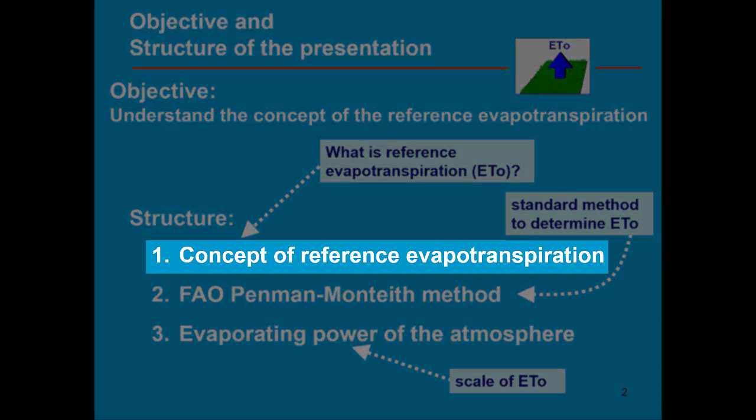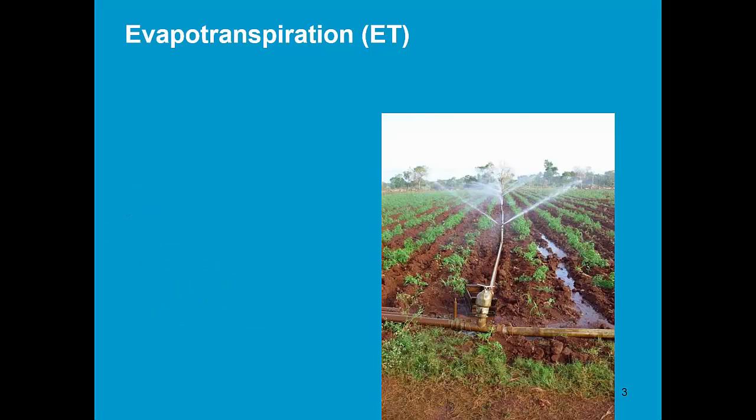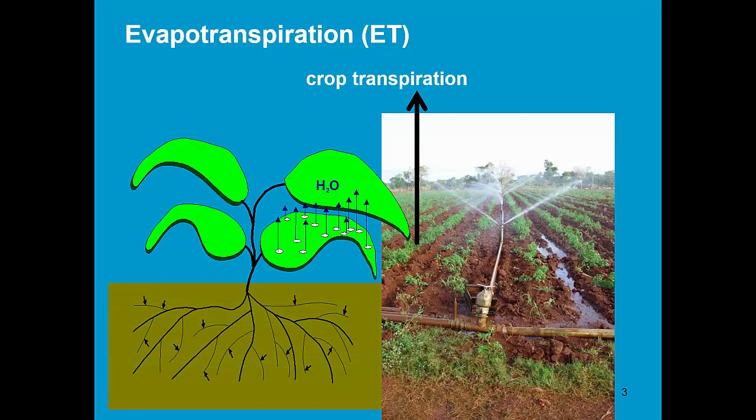So let's start with the concept of reference evapotranspiration. When water is applied to the field, the water will infiltrate in the soil and the roots will take it up and move it to the leaves, where water escapes as water vapor through the stomata. This process is called crop transpiration.